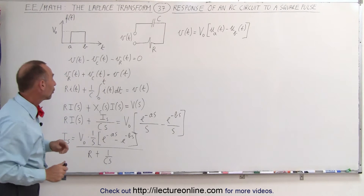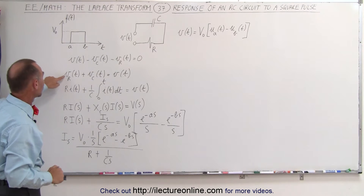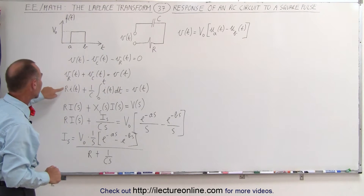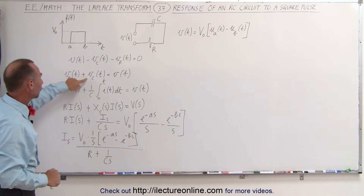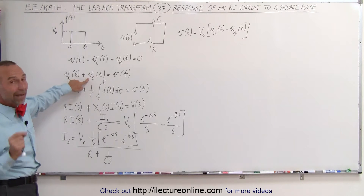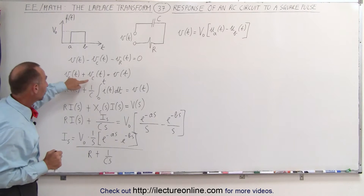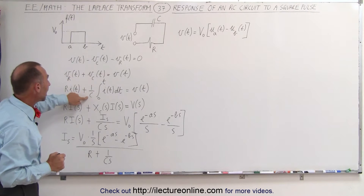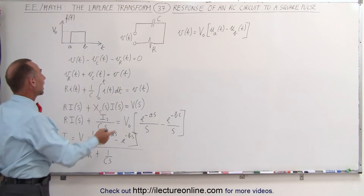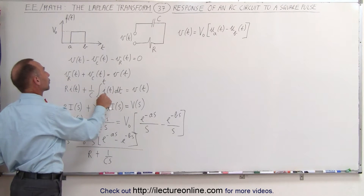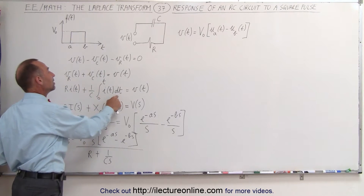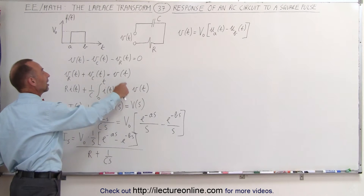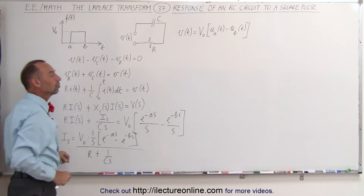The voltage across the resistor is the resistance times the current, and the voltage across the capacitor is equal to one over the capacitance times the integral of the current times dt, and we set that equal to the voltage.